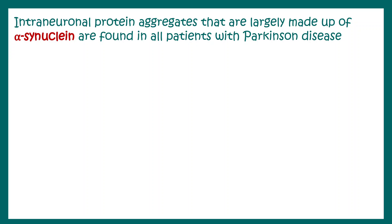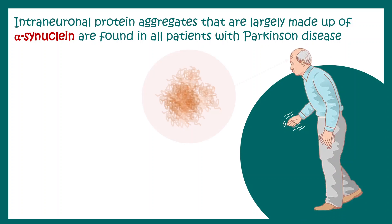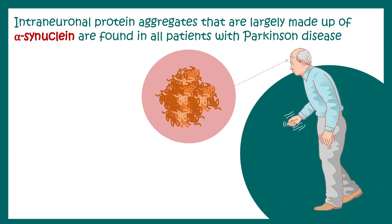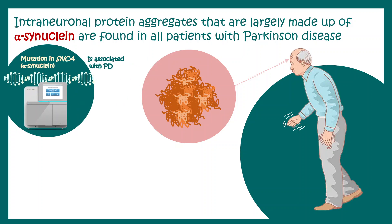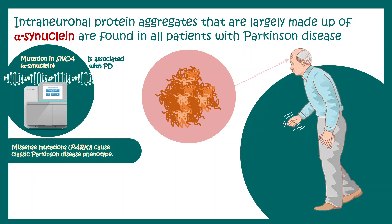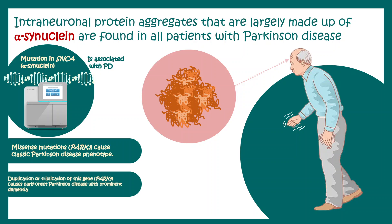One of the key aspects of Parkinson's pathology is protein aggregation. The aggregation of alpha-synuclein is thought to be one important cause of Parkinson's disease. Alpha-synuclein aggregations form Lewy bodies, which is one of the hallmarks of Parkinson's disease. Mutations in the alpha-synuclein gene have been found to be associated with Parkinson's disease. Missense mutations in this gene can cause a classic Parkinson-like phenotype, and there are also duplications and triplications associated with disease progression.